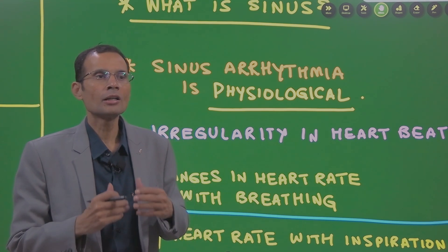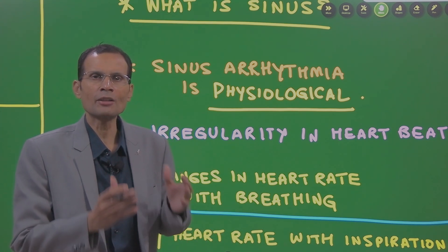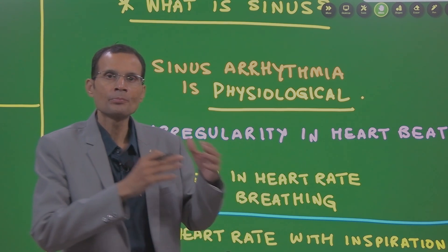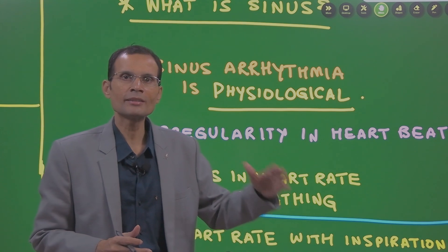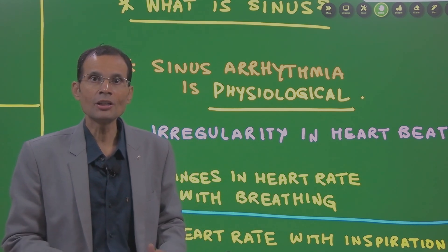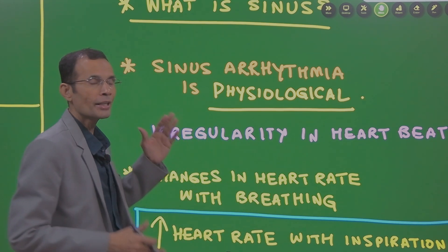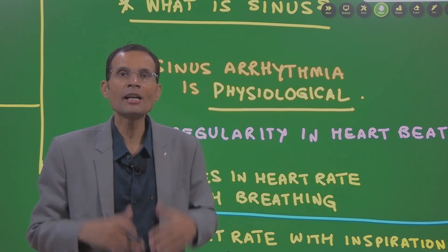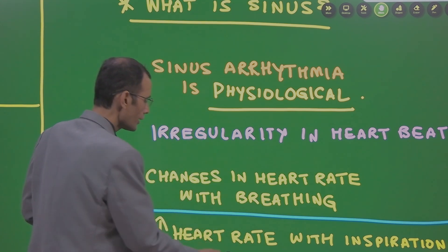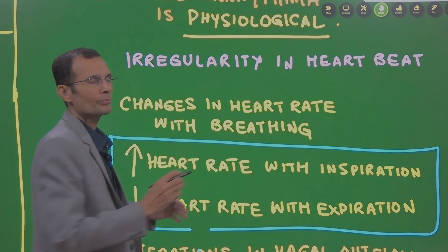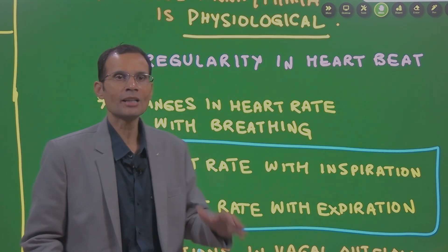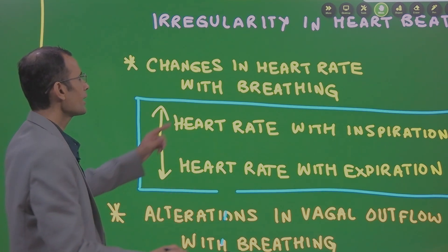Normally, SA node discharges the impulses at a very regular rhythm with a steady frequency. But here, SA node itself is becoming irregular and therefore, the irregularity in the heartbeat. That is the complete meaning of the term sinus arrhythmia.